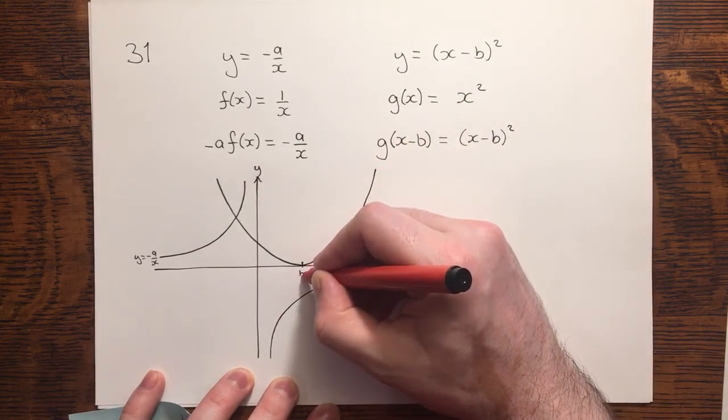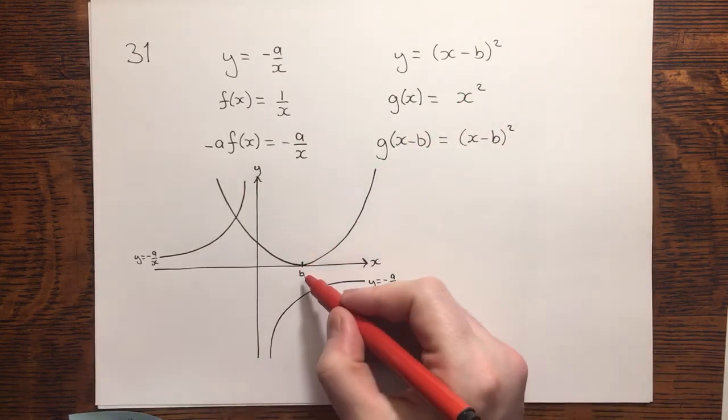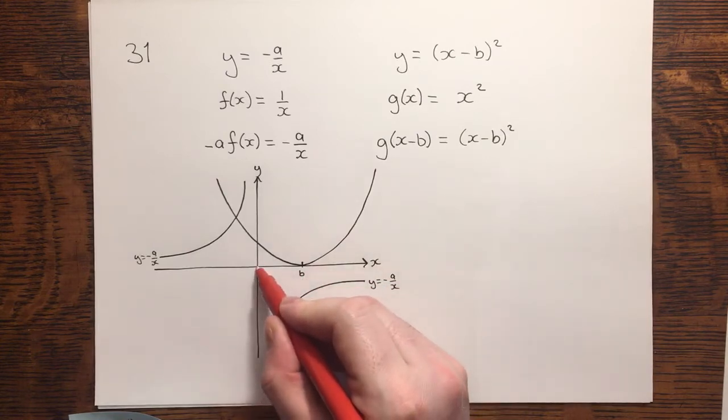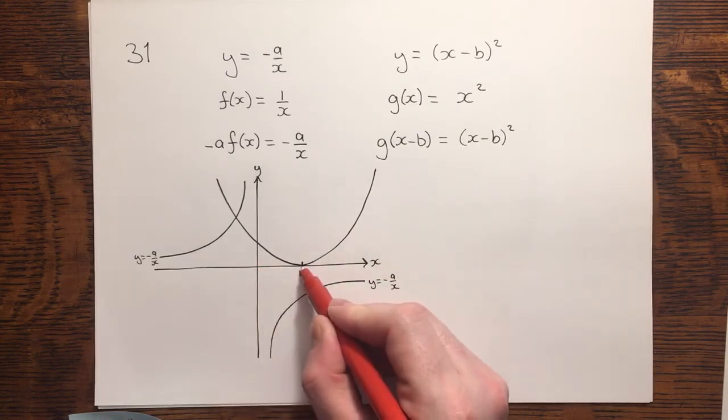This point will be b. That's relatively easy to determine, because it was at 0, and it's moved b across, and 0 plus b is b.